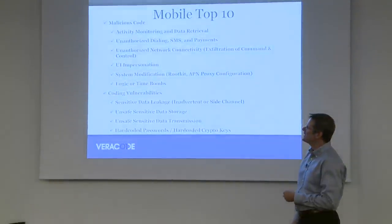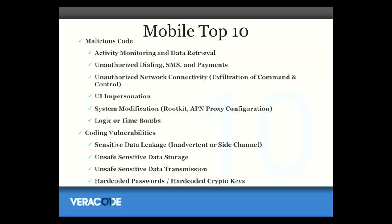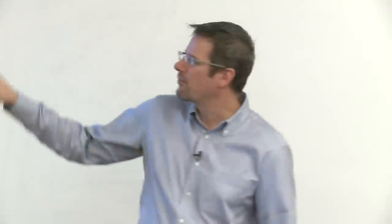Surveying the landscape and looking at all the different apps reported in the news as malicious, and inspecting a lot of apps through static binary analysis, we came up with what we call our top ten list of risky behaviors in applications. It's broken down into two sections: malicious code — bad things apps might be doing that are likely specifically put in by a malicious individual — and coding vulnerabilities, where the developer is making mistakes or doesn't understand how to write the app securely, putting the app user at risk.